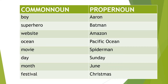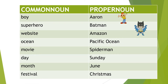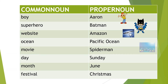Now let's look at the common noun and proper noun chart. Boy is a common noun, and a more specific name is a proper noun. Superhero is a common noun and Batman is a proper noun. A website is a common noun and Amazon is a proper noun. Ocean is a common noun, Pacific Ocean is a proper noun. Movie is a common noun, Spider-Man is a proper noun.